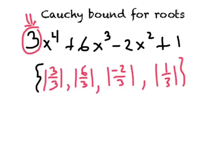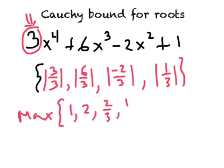Now we're going to take the biggest of this set. We're going to take the max of that set which is 1, 2, 2 thirds, and 1 third. So what is the max of that set? It's 2. We're going to take that maximum, we're going to add 1 to it. That's going to give us 3.